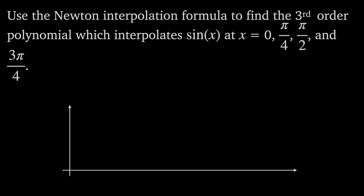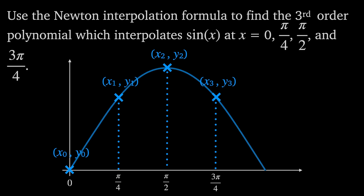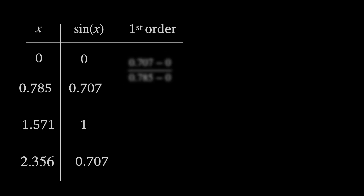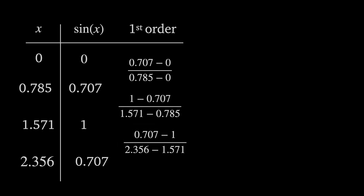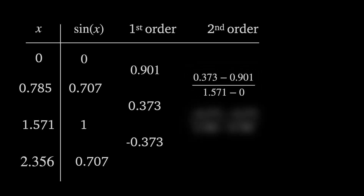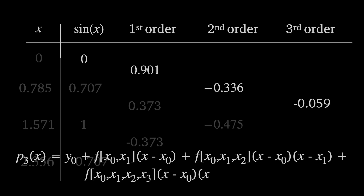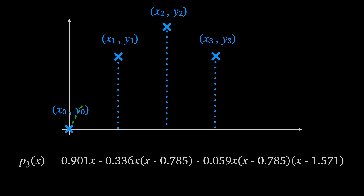Let's go through an example. We'll use the Newton interpolation formula to find the third order polynomial which interpolates sine of x at x equals 0, pi over 4, pi over 2, and 3 pi over 4. We write down the x and y values, calculate the first order divided differences, then the second order divided differences being careful with the denominator x values, and finally the third order divided difference. We then plug these divided differences back into the original Newton polynomial equation to get our final polynomial interpolating sine of x.